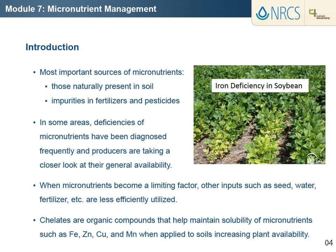An example is iron deficiency chlorosis in soybeans, which coincides with soils having alkaline pH and free carbonates. In some areas, micronutrient deficiencies have been diagnosed frequently and producers are taking a closer look at the general availability of these elements. For high yields and positive economic return to crop production, it is important to correctly recognize and correct micronutrient deficiencies. If micronutrients become a limiting factor, other inputs such as seed, water, and fertilizer are less efficiently utilized and may be wasted.